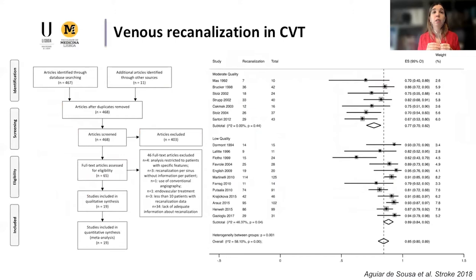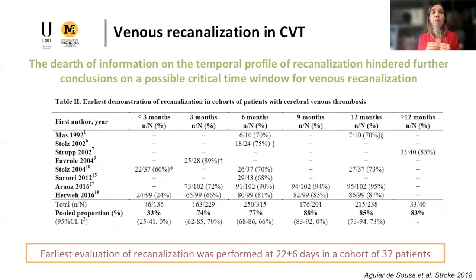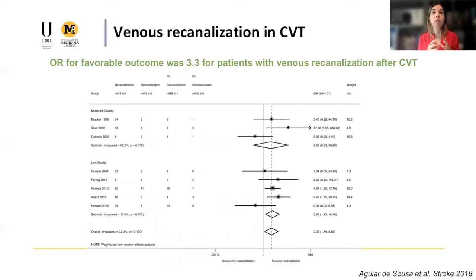A few years ago, we did a systematic review assessing recanalization in cerebral venous thrombosis. We confirmed that recanalization does occur in most anticoagulated patients — over 400 patients included in this analysis. However, there was almost no information on the temporal profile of recanalization in the early time window, before three months or even earlier — which would be the most critical time window for the evolution of brain lesions. This was an important gap in the evidence. Nevertheless, despite limited data, we found an association between favorable functional outcome and achieving venous recanalization during follow-up, even in patients treated only with anticoagulation.